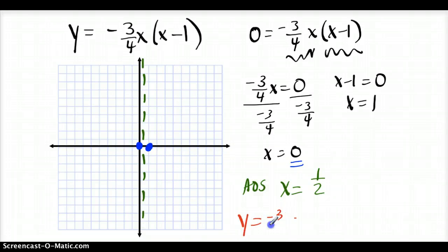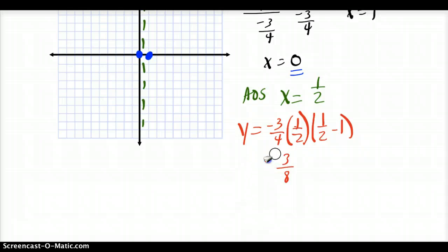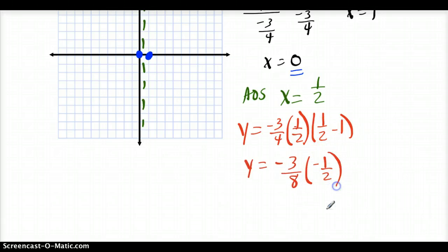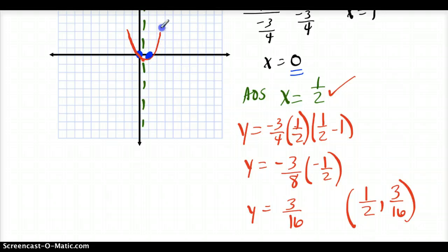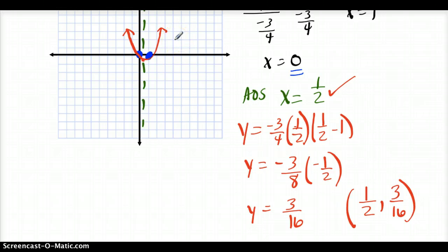To find the vertex, plug one-half in for x in the original function: y equals negative 3 times one-half times (one-half minus one-half). That gives negative 3/8 times negative 1/2, which equals 3/16. So the vertex is (1/2, 3/16), which is just a little bit below the axis of symmetry. The parabola goes through all three of those points. Complete the rest of the worksheet through problem 18, then pick up a new worksheet covering standard form, vertex form, and more factored forms — due Wednesday when I get back.